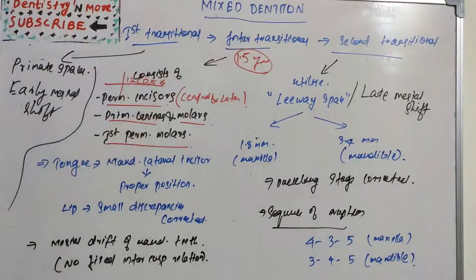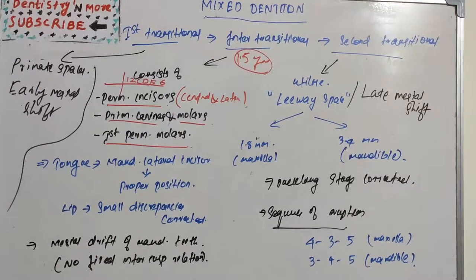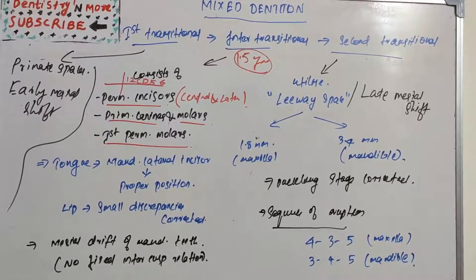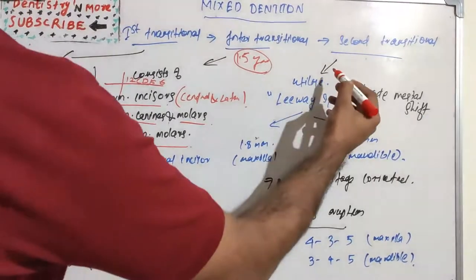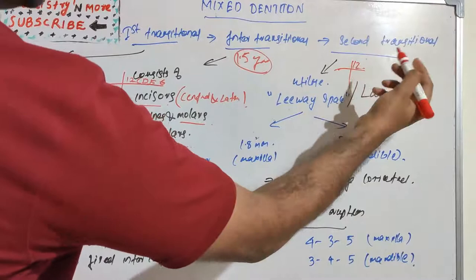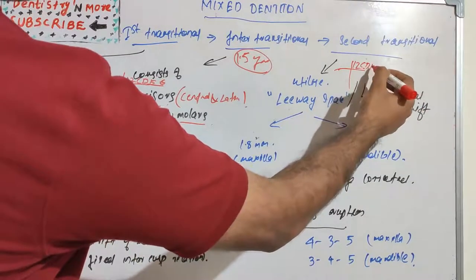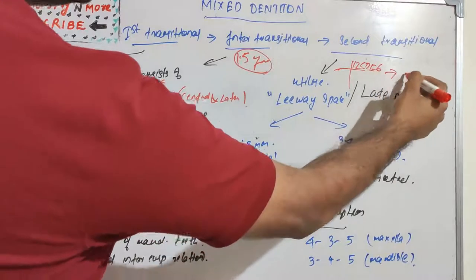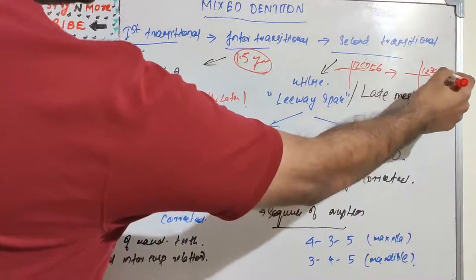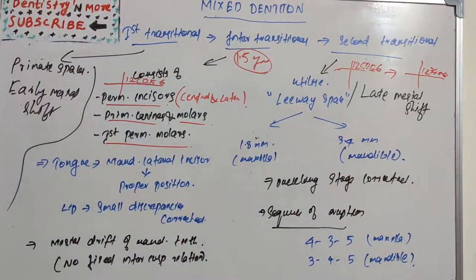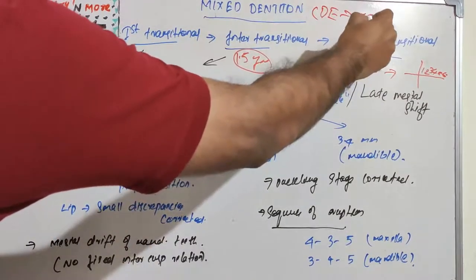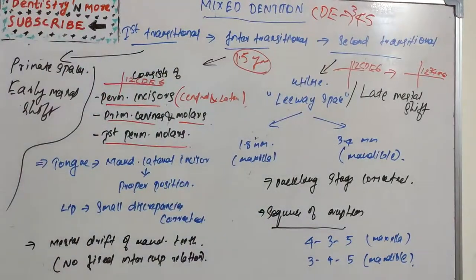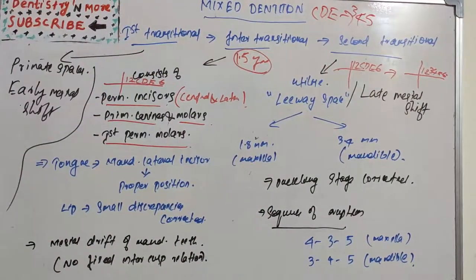So that is inter-transitional period. Mixed dentition was divided into first transitional, inter-transitional, and second transitional. The second transitional phase is characterized by the replacement of primary molars and canines by the premolars and permanent canines. So it was like one, two, C, D, E, six - will become one, two, three, four, five, and six.